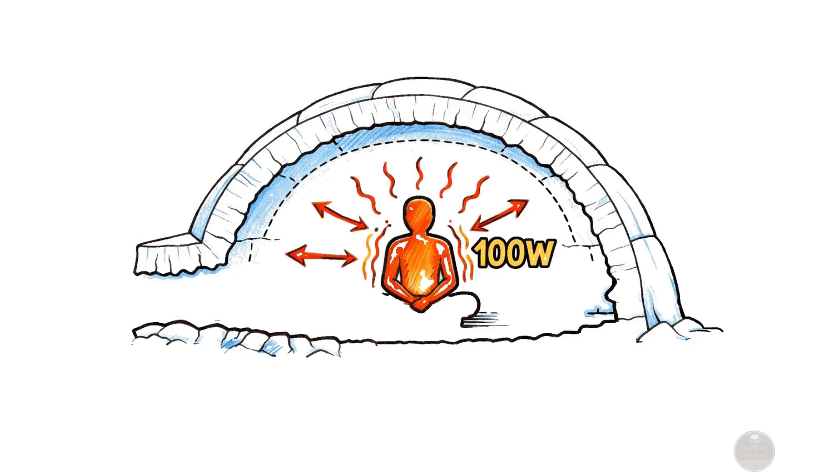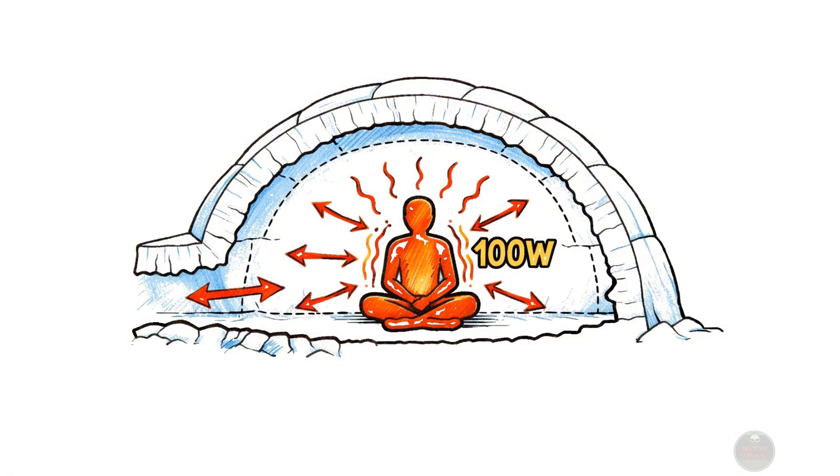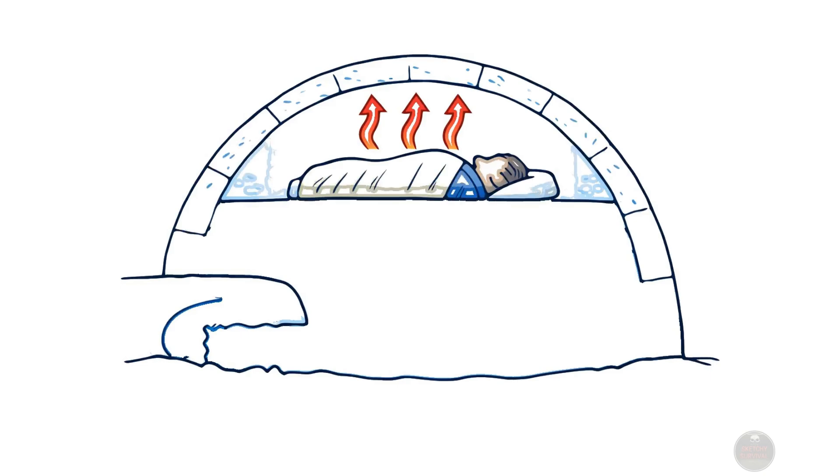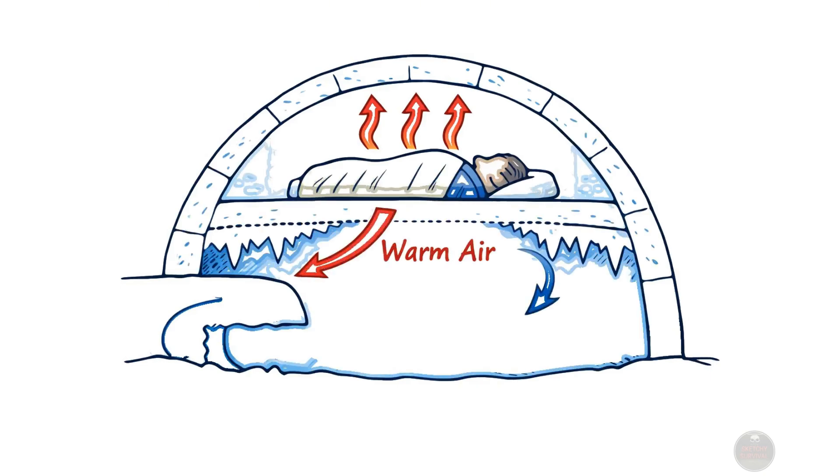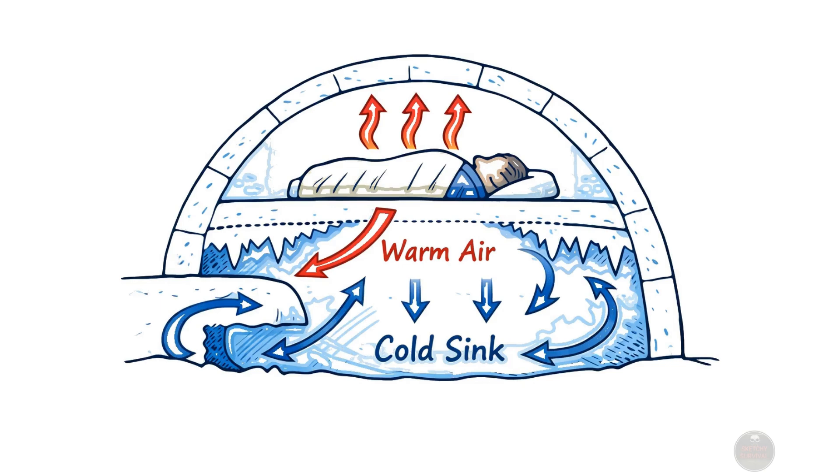Within the ingenious design of an igloo, your own human body serves as the primary heat source, essentially functioning like a small continuous radiator that emits around 100 watts. This constant warmth is then strategically managed by the igloo's architecture, which uses a clever cold sink mechanism to maximize heat retention.